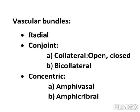The third type of vascular bundle is the concentric vascular bundle. A vascular bundle in which xylem completely surrounds the phloem, or vice versa, is called a concentric vascular bundle. It is of two types: amphivarsal and amphicribral.